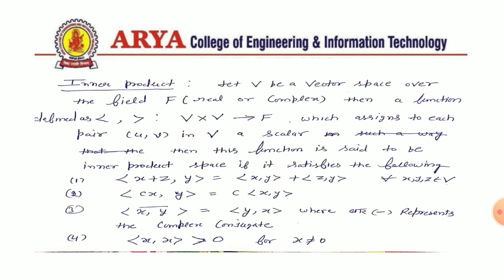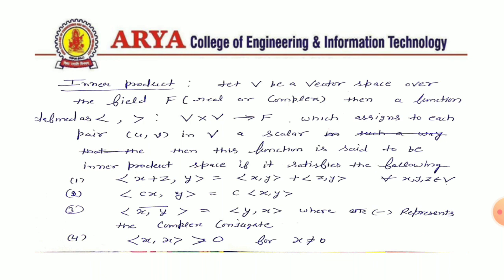If any function defined from V cross V to F satisfies these conditions, then we say that it is an inner product. The first condition is: inner product of (X+Z, Y) equals inner product of (X, Y) plus inner product of (Z, Y), for all X, Y, Z belonging to V.